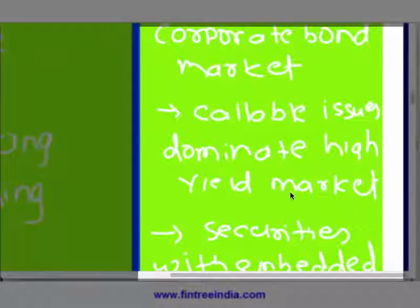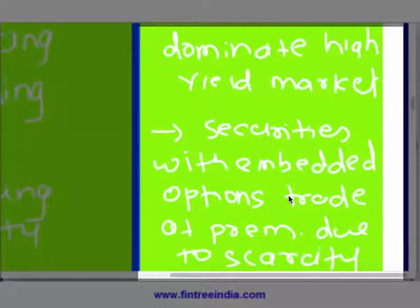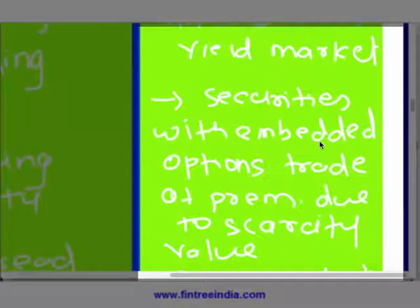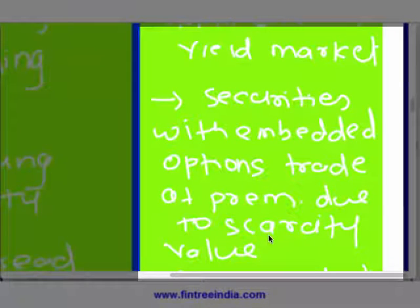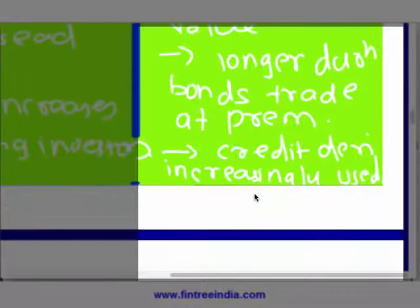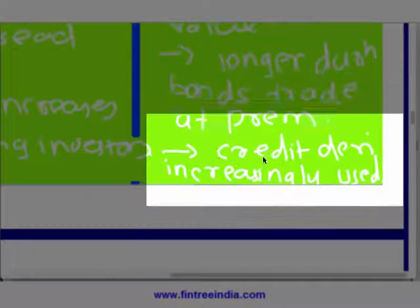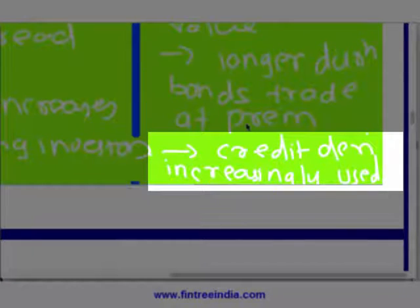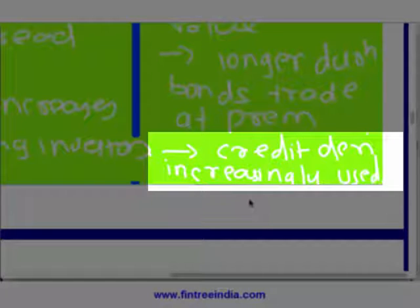What are the secular changes in the markets? Number one: intermediate bullets are dominant in the corporate bond market. Second: callable issues are dominant in the high yield market. Third: securities with embedded options trade at a premium due to their scarcity value. Fourth: longer duration bonds trade at a premium.